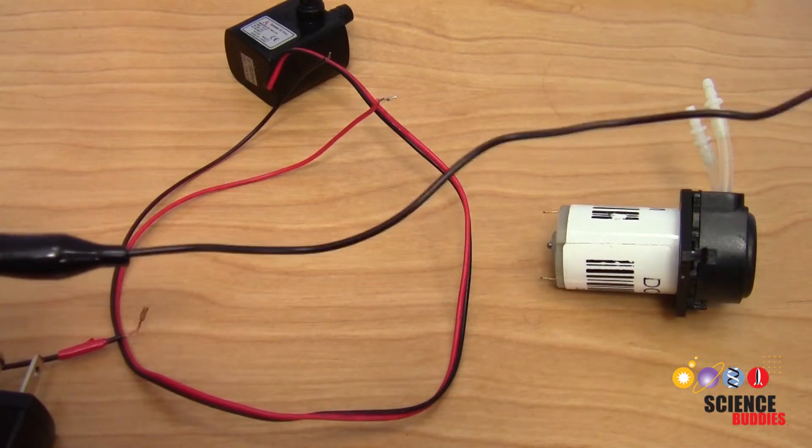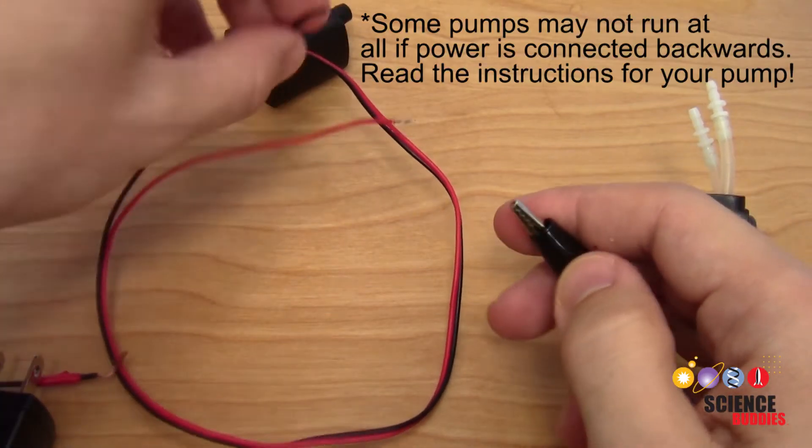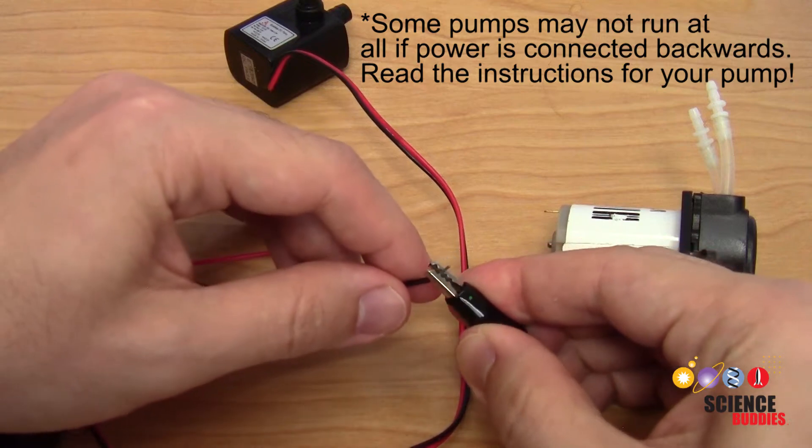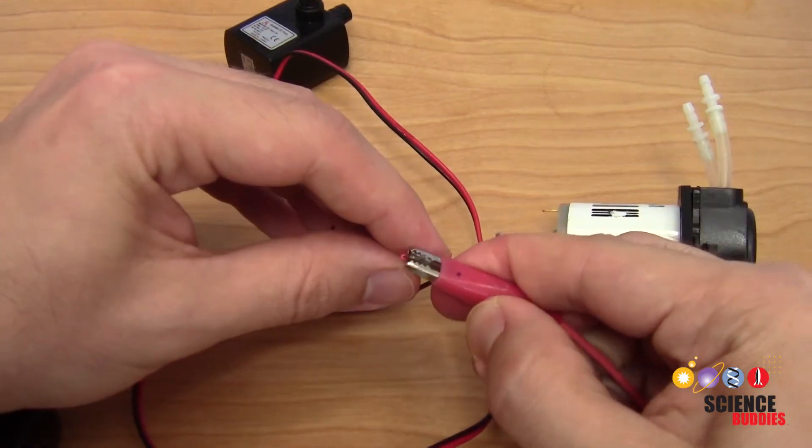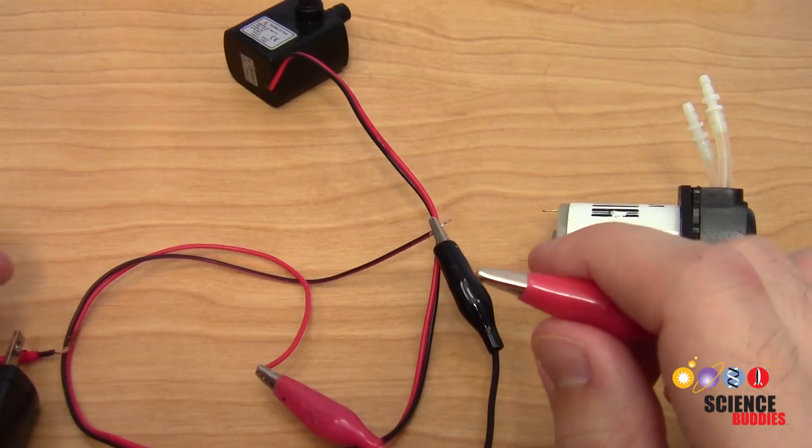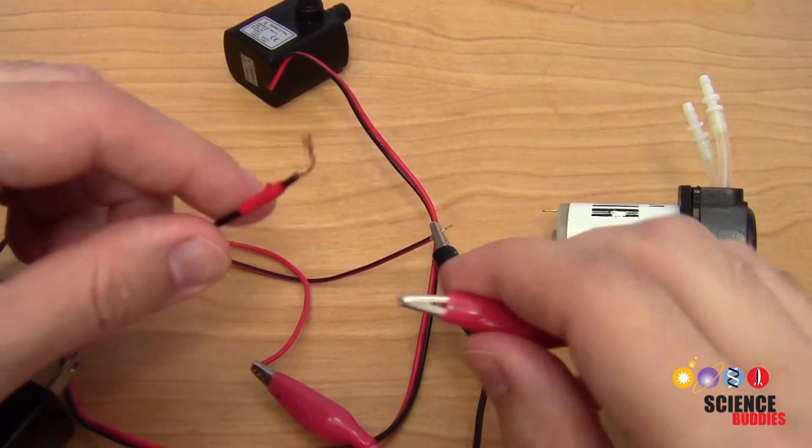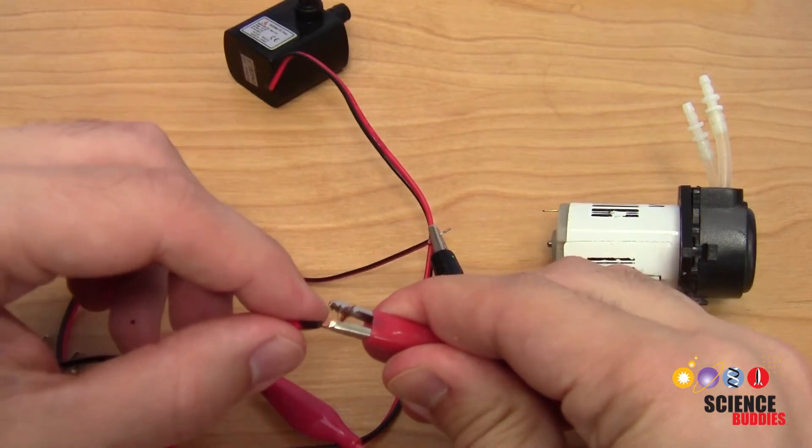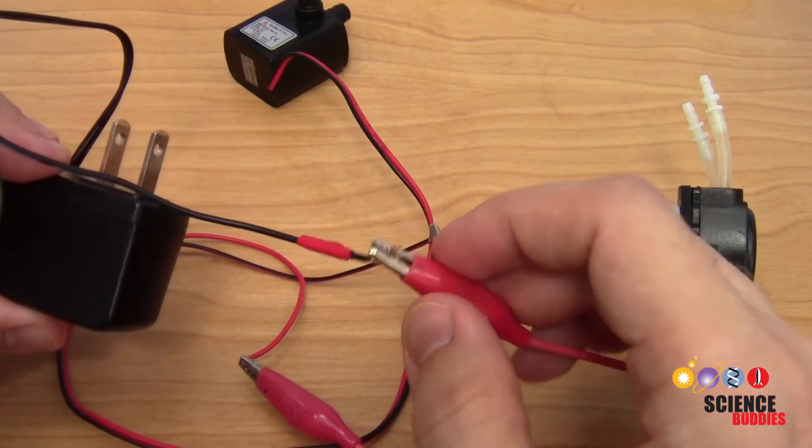If you get the connection backwards, the pump will just run in reverse. So you can simply switch the connection of the wires. But for example, I'm going to connect my two alligator clips to the pump wires here and then connect them to these separate wires from the wall adapter here. When I plug the wall adapter in, that should turn my pump on.